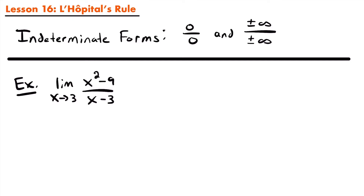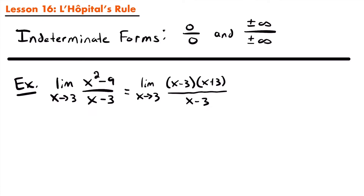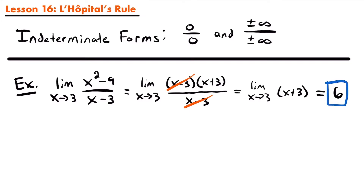So we have that indeterminate form of 0 divided by 0, which means we need to manipulate our limit a little bit. What we would do is factor the numerator — we have a difference of squares, x squared minus 9, which factors to x plus 3 times x minus 3. So this becomes the limit as x approaches 3 of (x minus 3)(x plus 3) divided by (x minus 3).